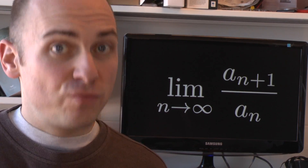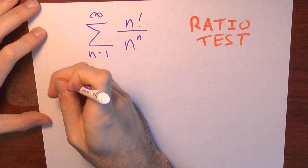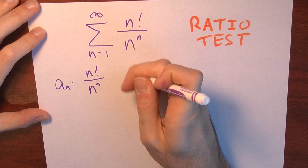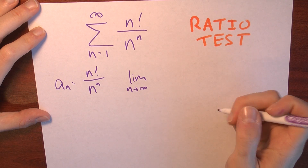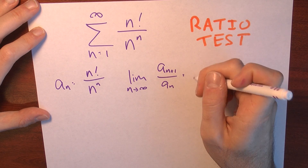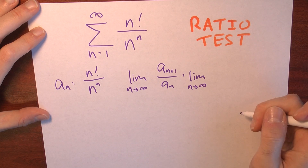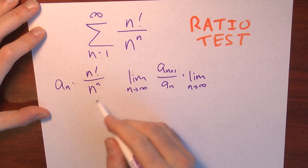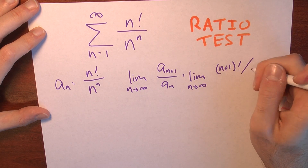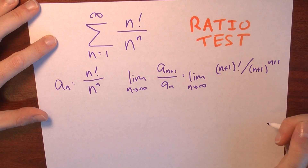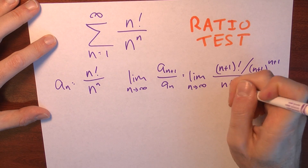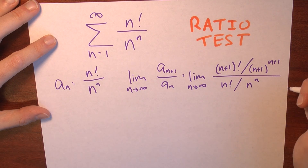Let's compute the limit of the ratio of neighboring terms. So I'll write a_n = n! / n^n. And I'm trying to calculate the limit as n approaches infinity of a_{n+1} over a_n. That's the limit as n approaches infinity. What's a_{n+1}? I just have to replace these n's with n+1. That's (n+1)! divided by (n+1)^(n+1), divided by a_n, which is n! over n^n.